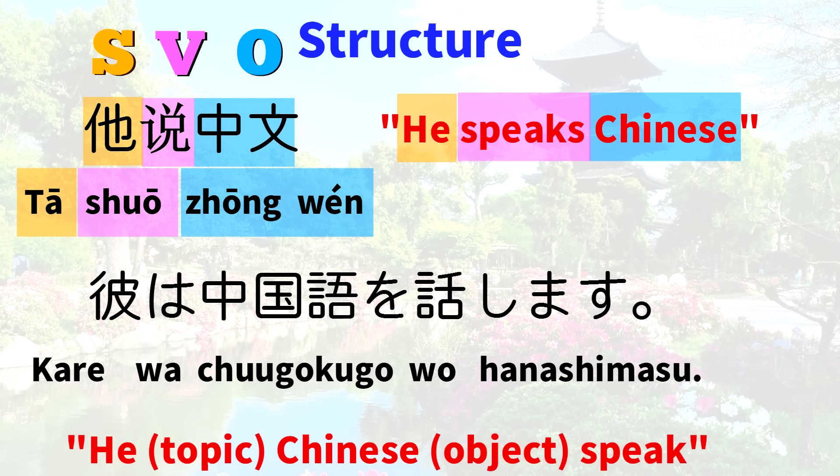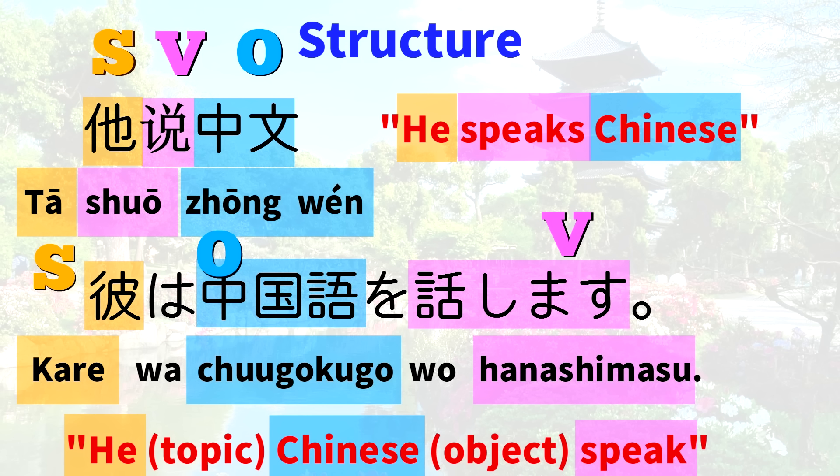And here's that sentence translated into Japanese: 彼は中国語を話します。Here we can see SOV: Subject, Object, Verb. And you can see there are some extra little words in Japanese that don't exist in the Chinese sentence. For example, Japanese has the topic marker は, which doesn't exist in Chinese, and Japanese also has the object marker を, which doesn't exist in Chinese.